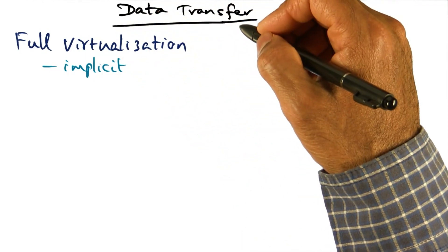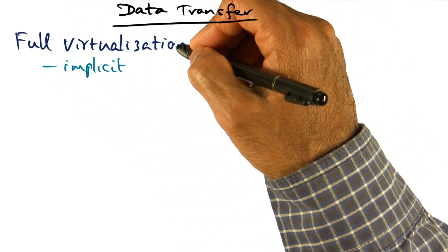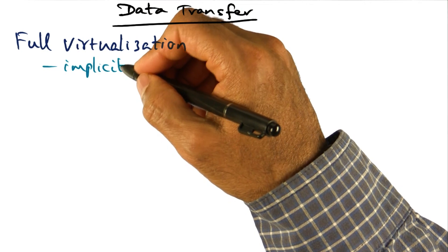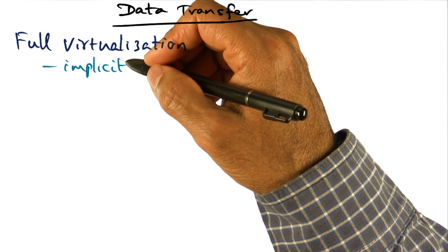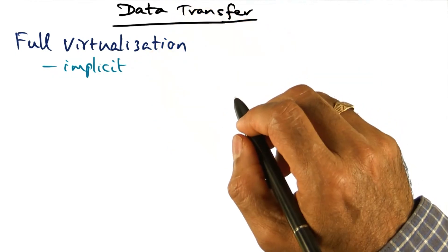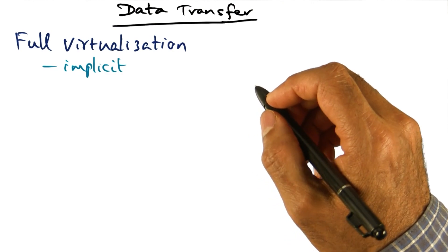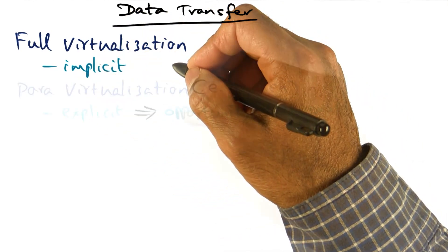How about data transfer? When you think about full virtualization, data transfer is implicit. Any data movement that has to happen between the hypervisor and the fully virtualized operating system happens implicitly.